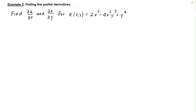In this example, we're going to find the partial derivatives for this multivariable function that you see here. We're going to find the partial of Z with respect to X and the partial of Z with respect to Y. We're not going to use the limit definition — we're going to use a relatively easier method.